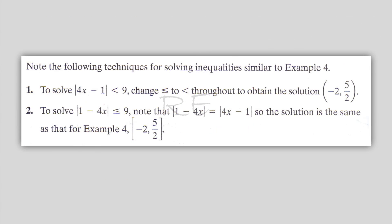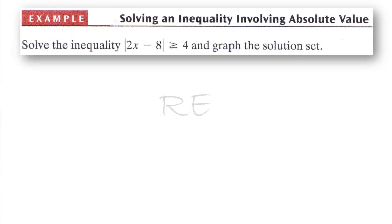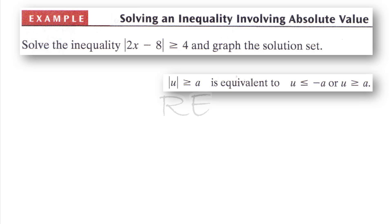Following the same techniques, the student should be able to solve problems 1 and 2 easily. Now, if the absolute value of u is greater than or equal to a, then u is less than or equal to negative a, or u is greater than or equal to a. More is all.